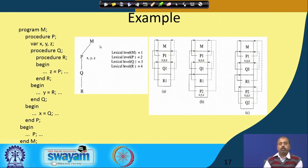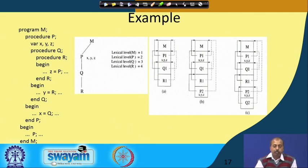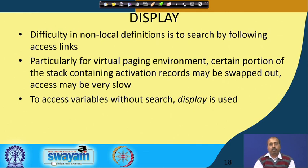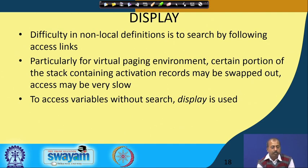Can we do something to make it faster? There is a concept called display. This display has nothing to do with a computer display — it is a data structure in which we store the relevant pointers to the activation record stack. The difficulty in non-local definitions is to search by following access links. Particularly in a virtual paging environment, certain portions of the stack containing activation records will be swapped out and access may be very slow.